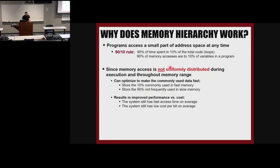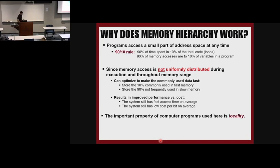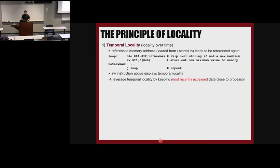If we use memory hierarchy, we get a system with faster average access time. For the first access it's not as good, but the more you use that data, the better it gets. It still has low cost per bit because you're keeping 90% of the data on the cheaper memory. The important property we use in cache hierarchy is locality — it's why memory hierarchy works. Let's look at examples of locality.